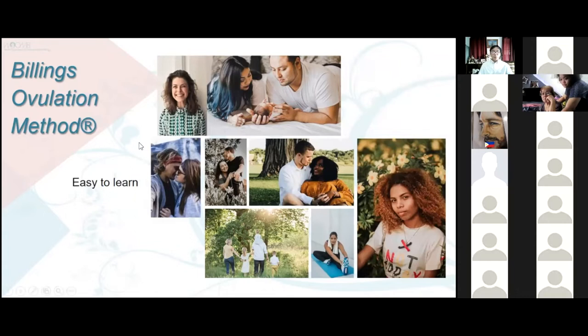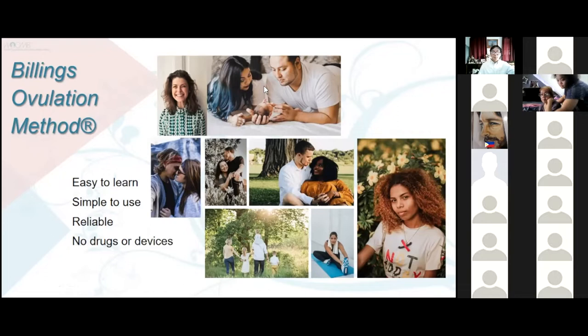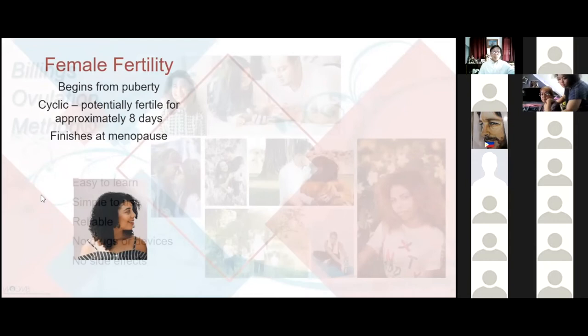The Billings Ovulation Method serves as a way to postpone pregnancy. At the same time, it can accompany couples to achieve pregnancy, and it can also monitor reproductive health. It is easy to learn, simple to use, and reliable. According to the World Health Organization, upon a series of studies, it is 99% effective. There are no drugs or devices, no side effects, and it is morally accepted in all cultures.